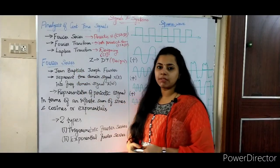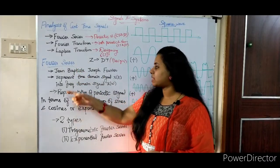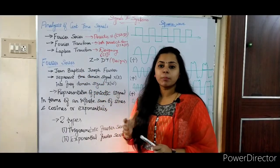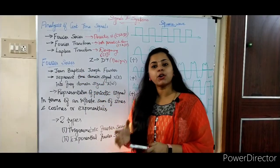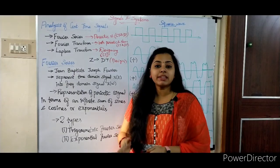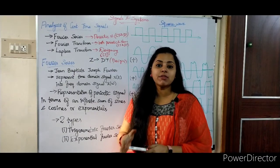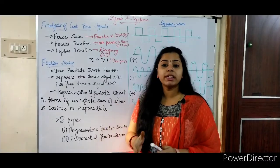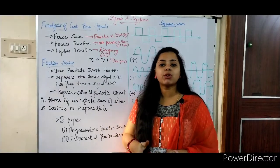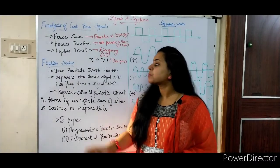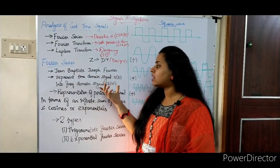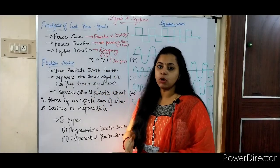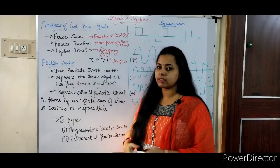Now, who discovered the Fourier series? It was Jean-Baptiste Joseph Fourier. He was a mathematician and also a physicist. Because of physics, heat equations are solved using the Fourier series, and that is his major contribution — which is why it is called the Fourier series.